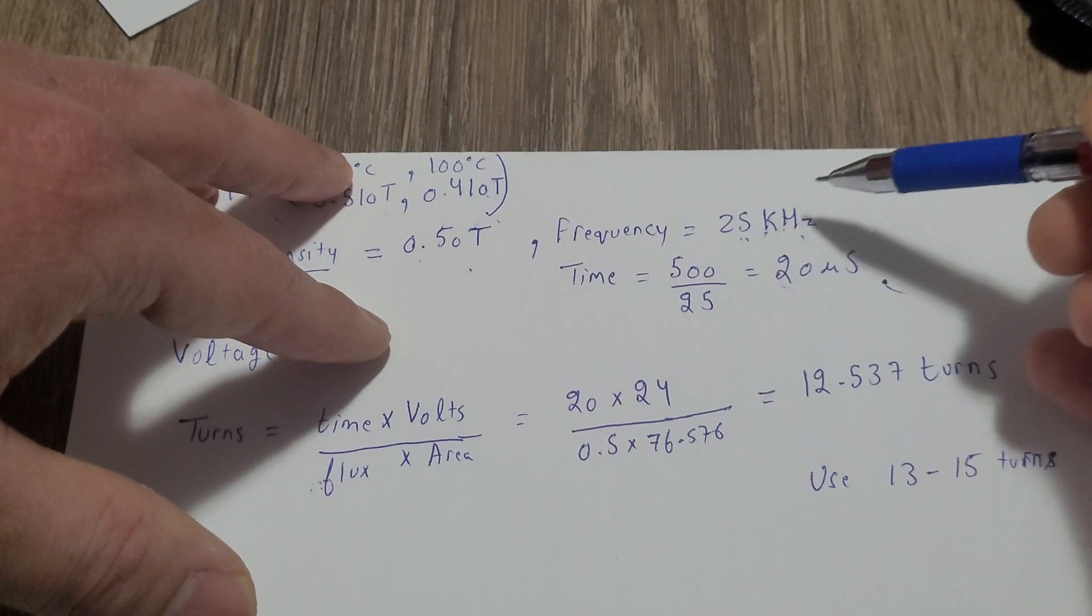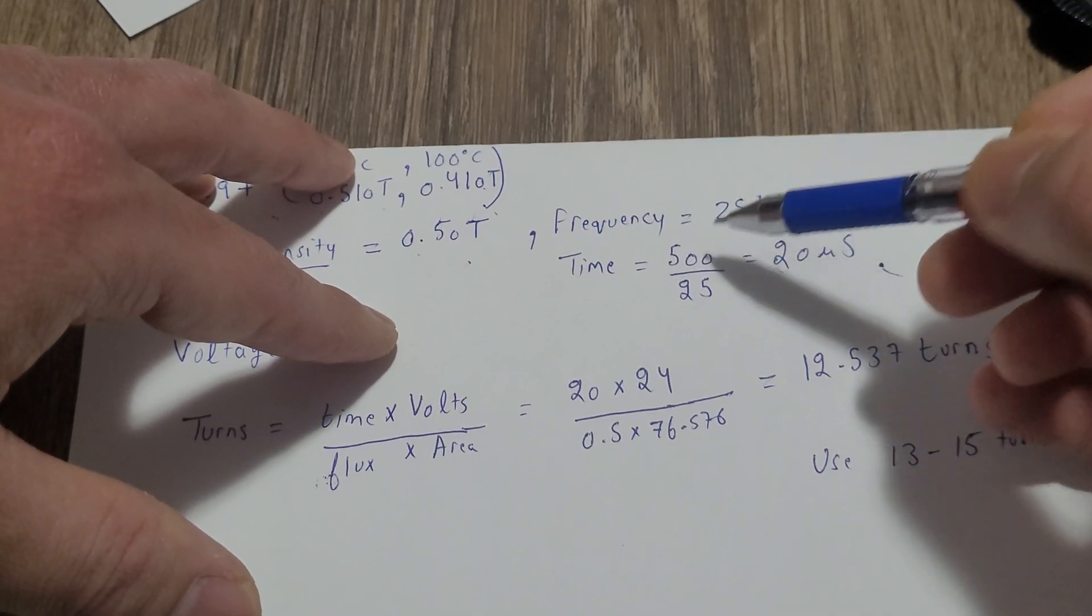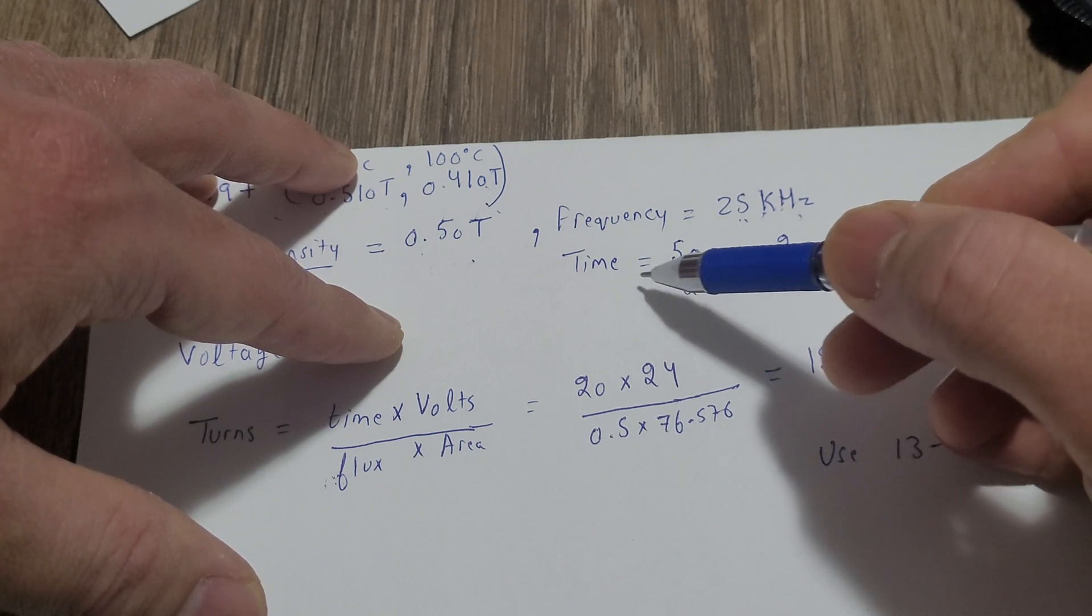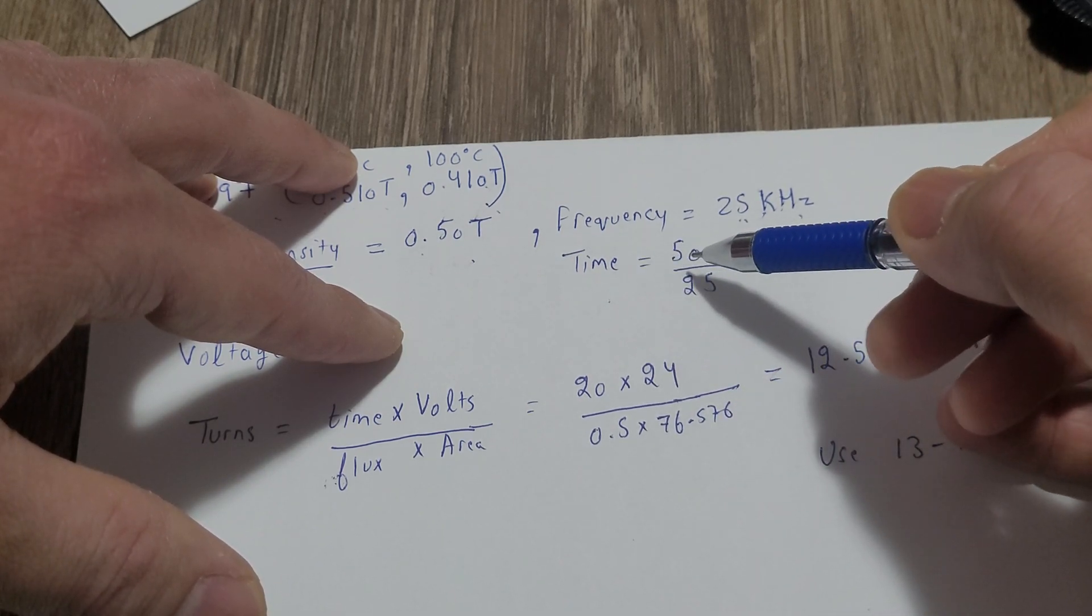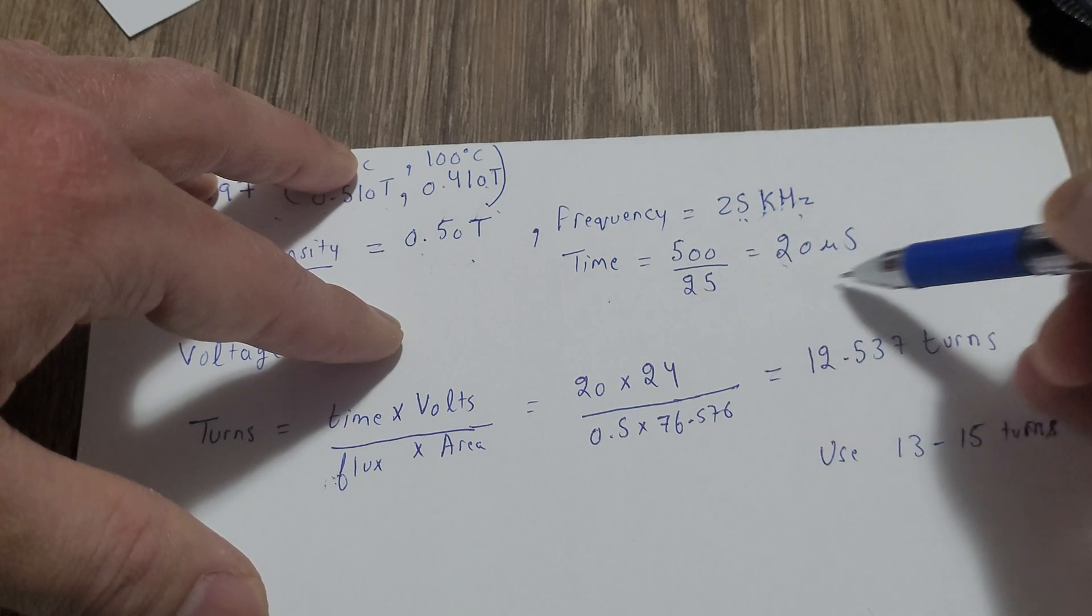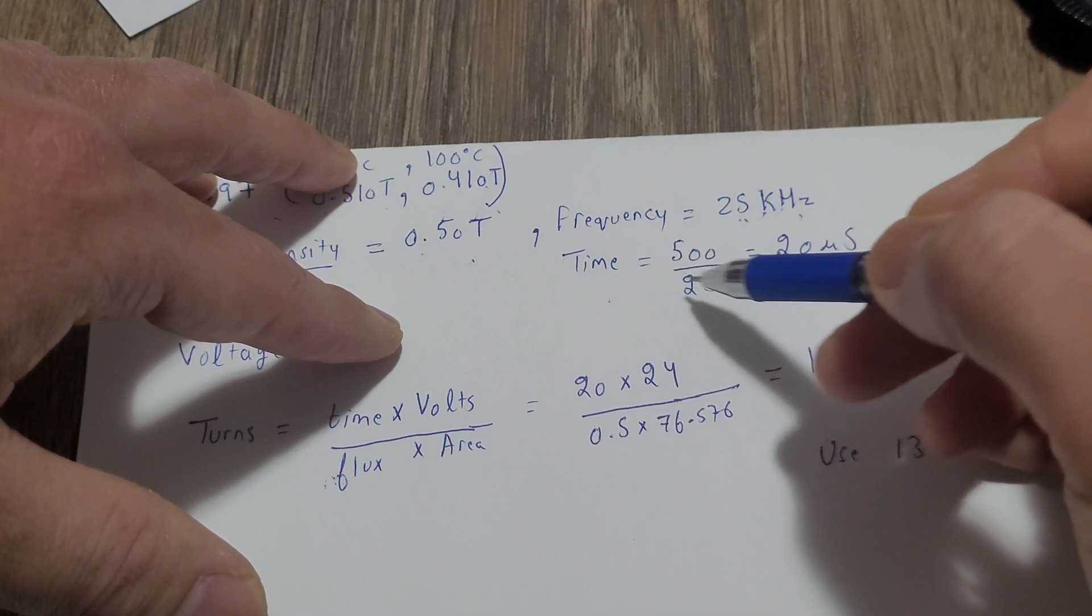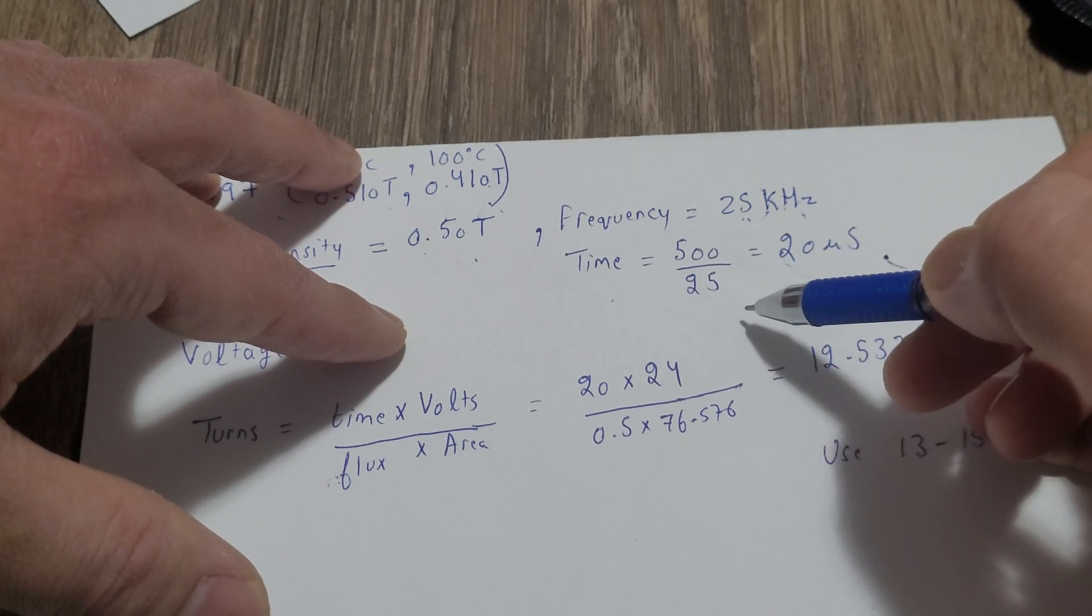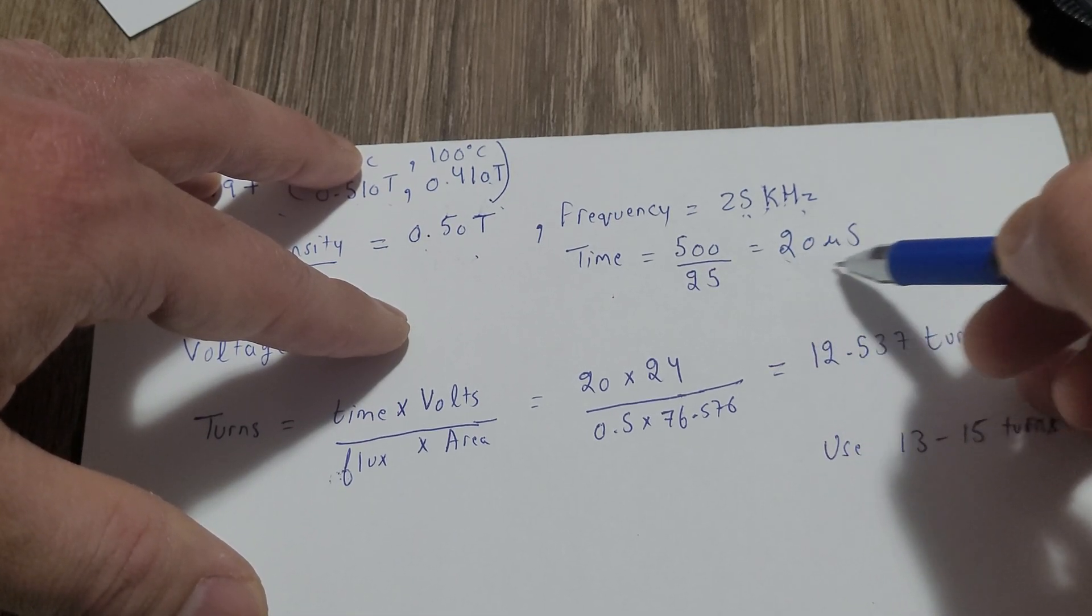Now put that value here at the bottom. If we have to calculate time, we need time in microseconds. Use 500 divided by your frequency, so 500 divided by 25 will give you 20 microseconds.